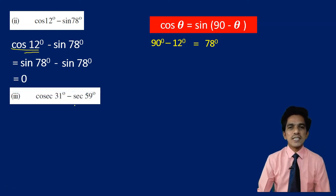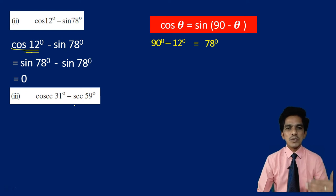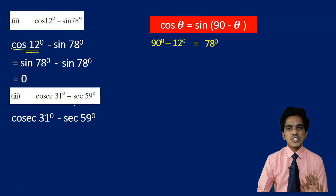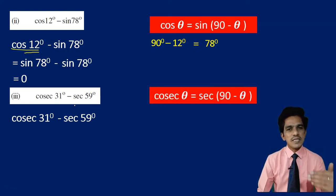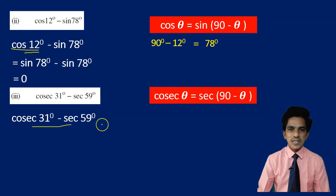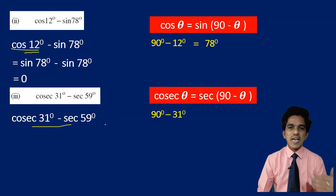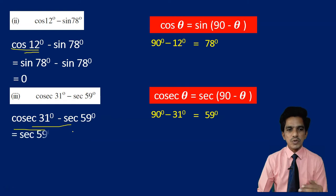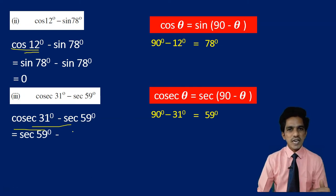Look at the next one: cosecant 31 degrees minus secant 59 degrees. This involves cosecant and secant. Note that 31 plus 59 equals 90. So I can convert cosecant to secant using the formula: cosecant is equal to secant of 90 degrees minus theta. The complementary of 31 is 59. So cosecant 31 degrees becomes secant 59 degrees. The first value becomes secant 59 degrees minus secant 59 degrees, which equals 0.